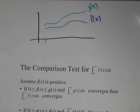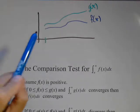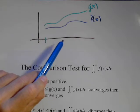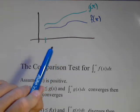To make sense of this, think of it in terms of area. If we can calculate the area underneath g of x and f of x is smaller, then we can definitely calculate the area under f of x.